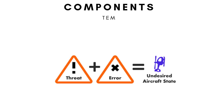Managing these three components is key to maintaining safety. Controllers need to continuously monitor the airspace, detect issues early, and apply countermeasures to prevent escalation.